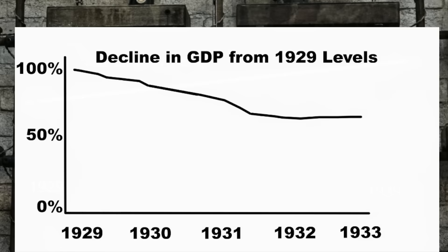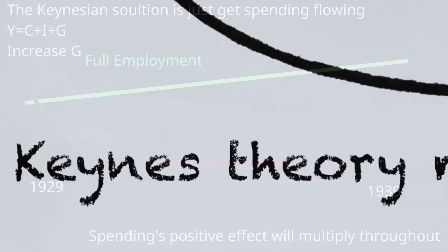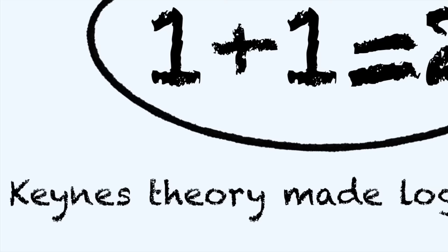In textbook terms, if Y equals C plus I plus G, and C and I are stuck in low gear, then Y, or GDP, is by definition down. One of the reasons that Keynesian economics had so much influence was, within the context of the time, Keynes' theory made logical sense.